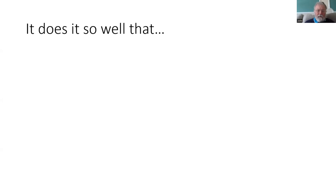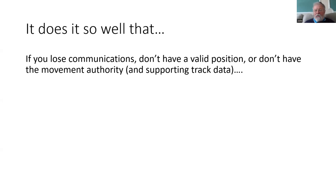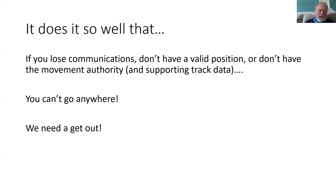But that's a little bit of a challenge when the system isn't working. If you lose communications, don't have a valid position, don't have the movement authority and the supporting track data, then you just can't go anywhere. So despite the fact that it causes qualms for safety engineers and managers when you say that the driver can, with a touch of a few buttons, turn off the safety system, you do need to have a get out. You need to be able to move a train in those failed situations.